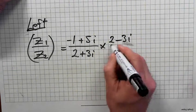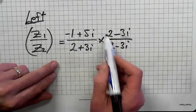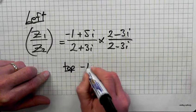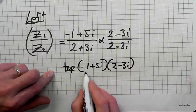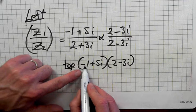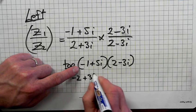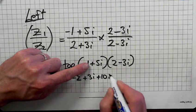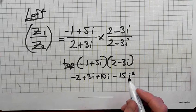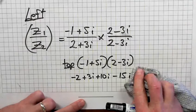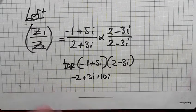Right, first of all I'll figure out the top bit of this. Minus 1 plus 5i times 2 minus 3i. Now instead of writing it out as I normally do, I'm just going to multiply it. So minus 1 times 2: minus 2. Minus 1 times minus 3i: plus 3i. Plus 5i times 2: plus 10i. Plus 5i times minus 3i: minus 15i squared. I squared becomes minus 1, so minus 1 times 15 becomes plus 15.